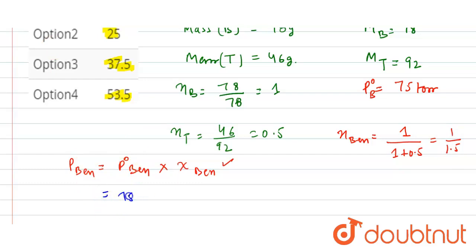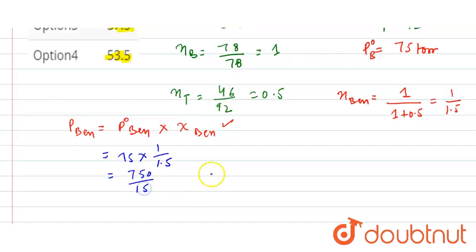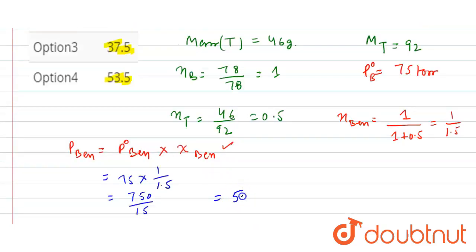So putting these values in this formula, it is 75 times 1 by 1.5. So from here, 750 divided by 15, so it is equal to 50. So here option first is correct. Thank you.